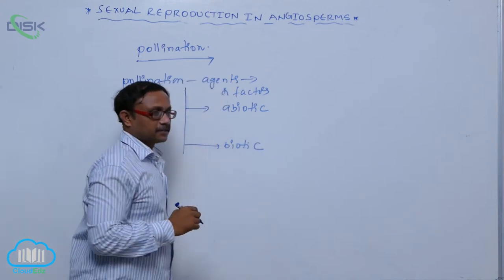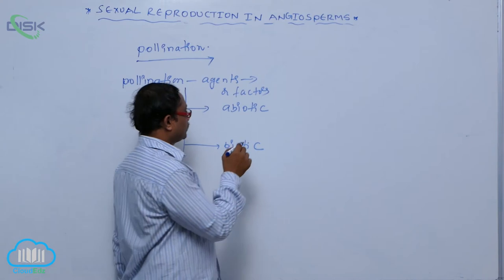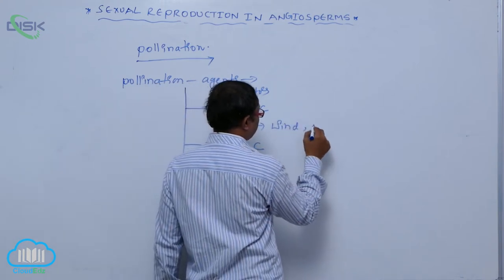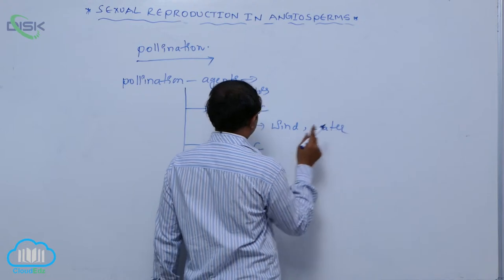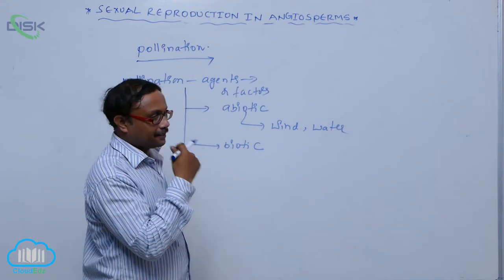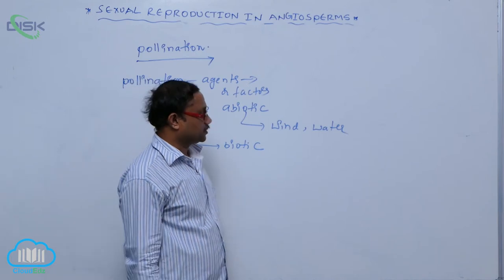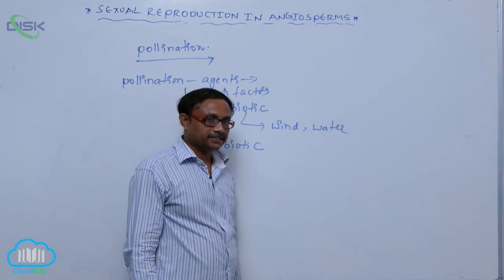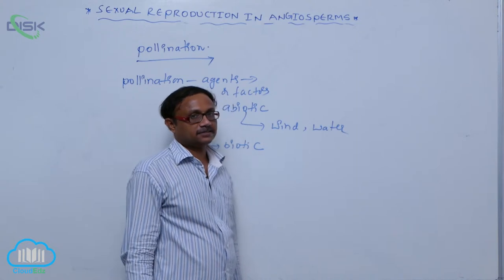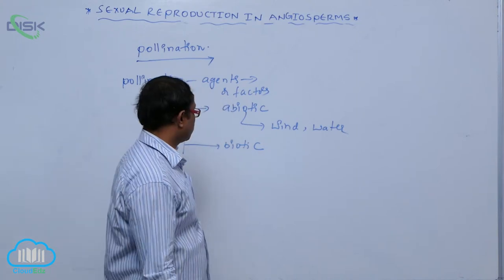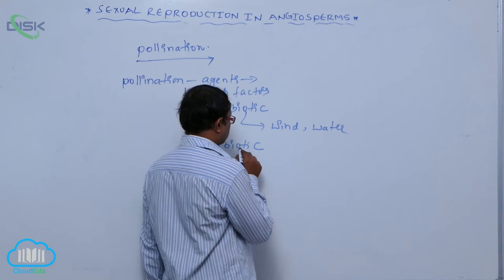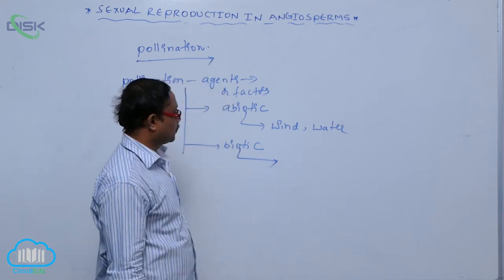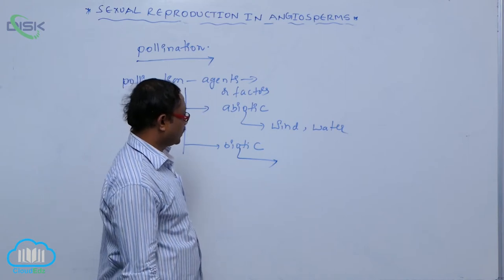Abiotic agents are non-living factors, generally wind and water. In most plants, cross-pollination takes place by biotic agents — living organisms.